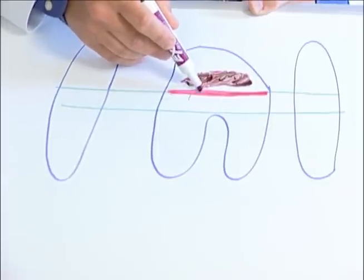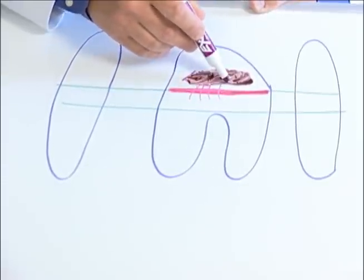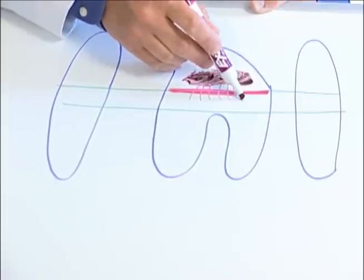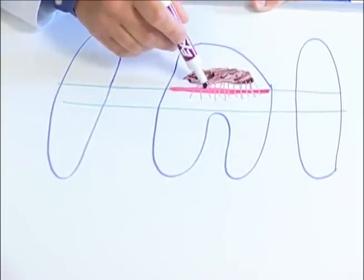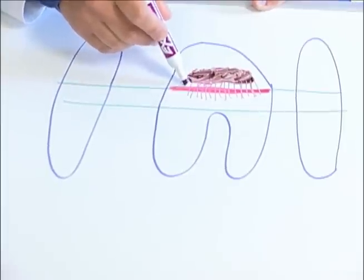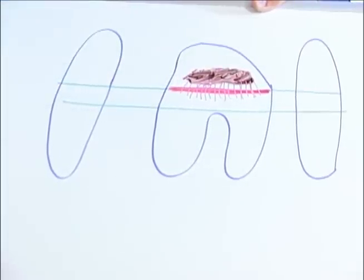Over time, if not treated, gingivitis will progress to periodontitis. This is where the bacteria go deeper and deeper into the supporting structures of the teeth. These are the periodontal ligament and bone. The deeper the bacteria get, the more virulent they become.